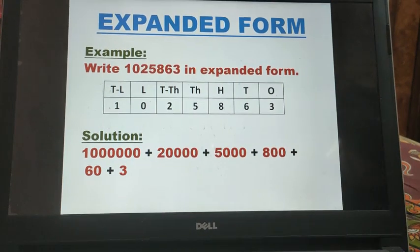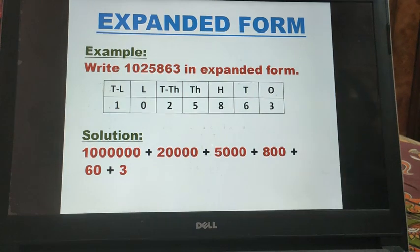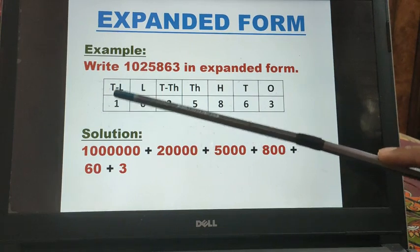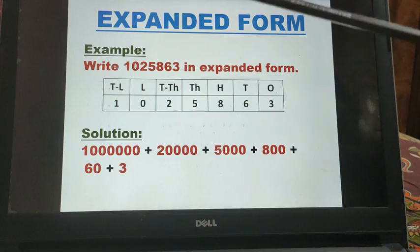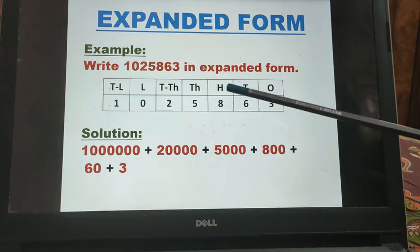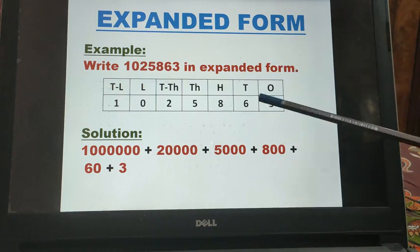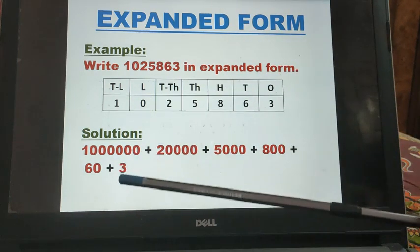According to the definition we have to find the sum of the place values. So first we will write the place value of all the numbers. The place value of 1 is 10 lakh, place value of 2 is 20,000, place value of 5 is 5000, place value of 8 is 800, place value of 6 is 60 and place value of 3 is 3.